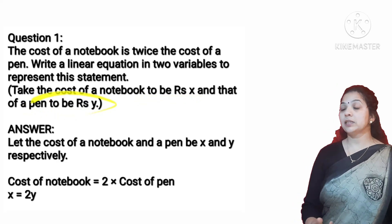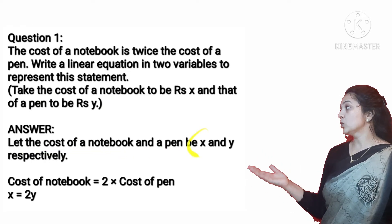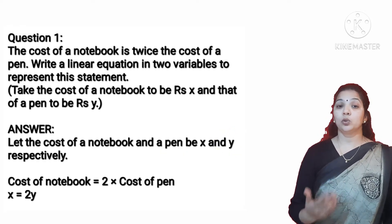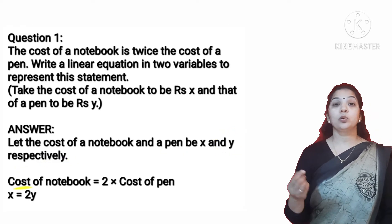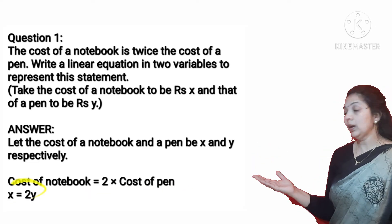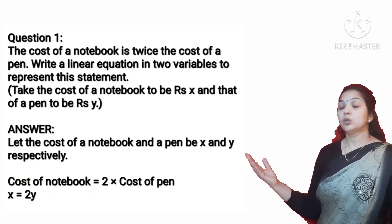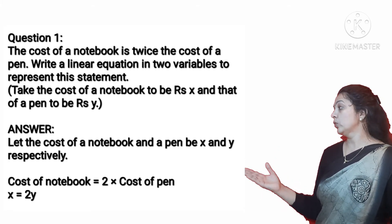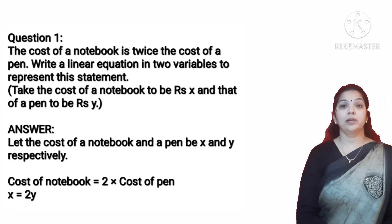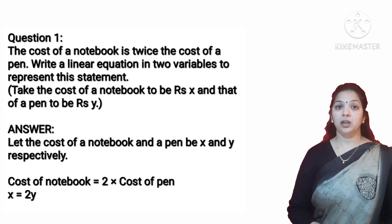If we consider the cost of the notebook as X rupees and the cost of the pen as Y rupees, then the cost of the notebook equals twice the cost of the pen, so X = 2Y. Taking 2Y to the left hand side, it becomes X minus 2Y = 0. This is how we represent the statement as a linear equation.